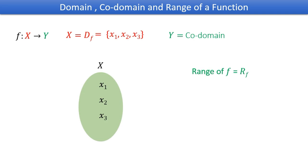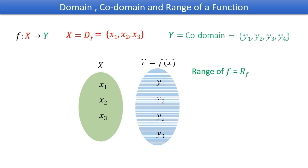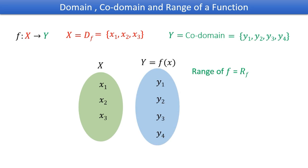Let X contain elements x sub 1, x sub 2, and x sub 3, and codomain contain elements y sub 1, y sub 2, y sub 3, and y sub 4.